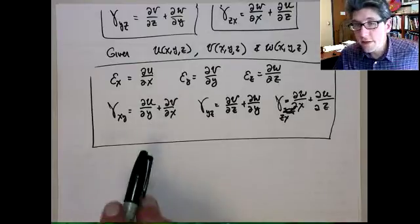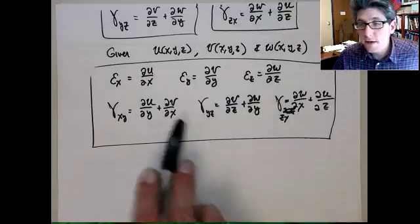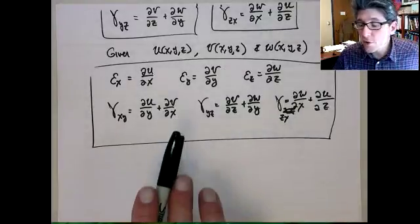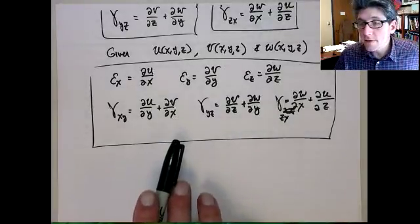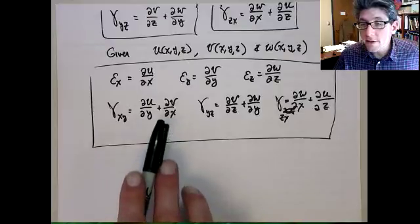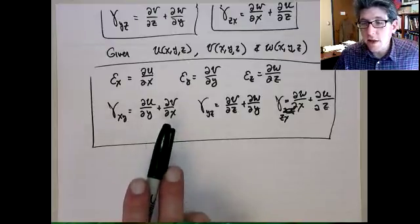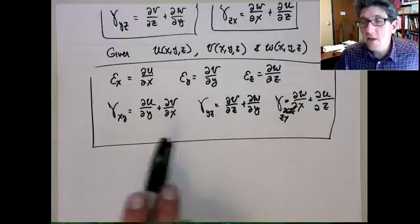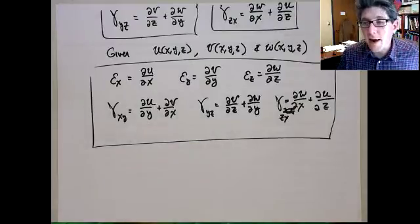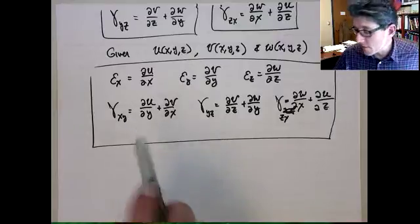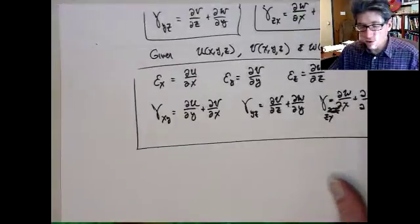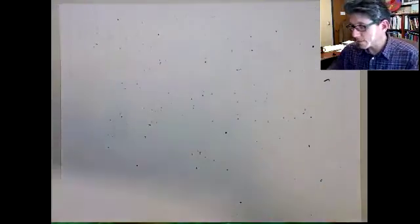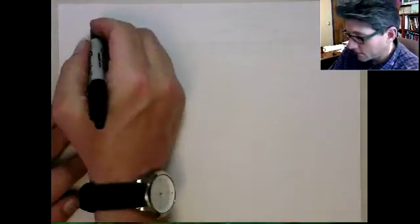Last time we looked at deriving the strain as a gradient of the displacement fields. This is a mathematical description. If you're given mathematically the displacement, you can exactly compute the strain at a point, given the following definitions. So let's do a simple example. Let's just consider a planar case.